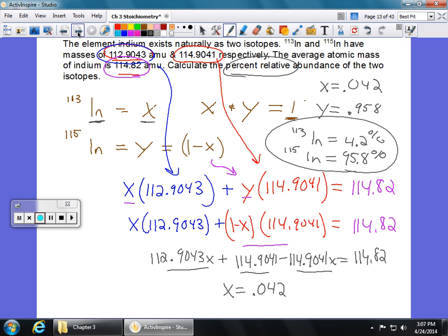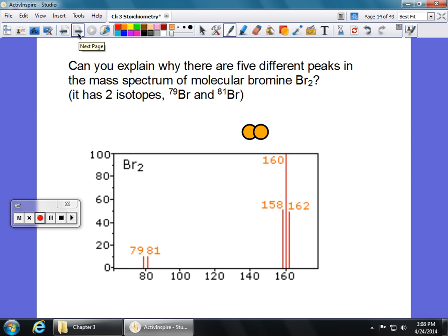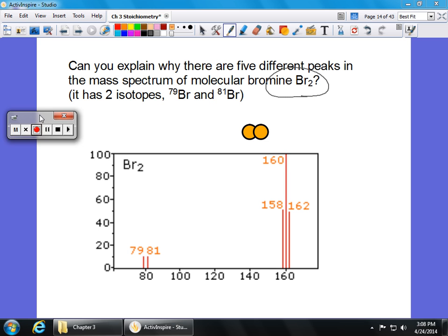Okay. One last problem that we could see. So let's look at a slightly more complicated mass spectrum. So in this case, we've got bromine. So bromine is a diatomic element. And when bromine is injected into the mass spectrometer, what we get is not just one peak. We actually get five peaks. And bromine only has two naturally occurring isotopes. It's got bromine 79 and bromine 81. So the question asks, can you explain why there are five different peaks?